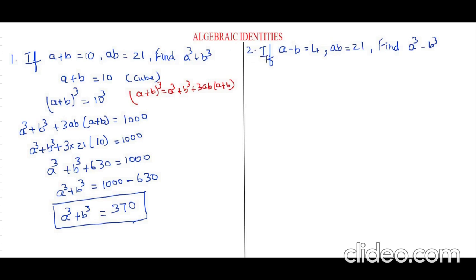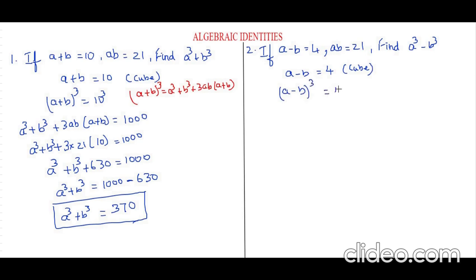Now let's see the second example: if a minus b equals 4 and ab equals 21, find a cube minus b cube. It is similar to the previous question — over here it is plus and here it is minus. We are just going to follow the same steps. Let's take a minus b equals 4 as given and cube both the sides, giving a minus b whole cube equals 4 cube.